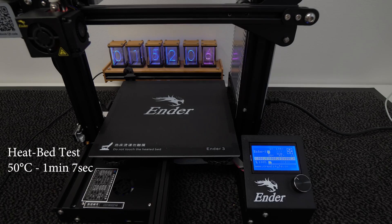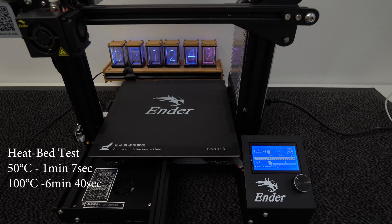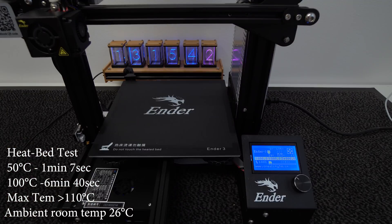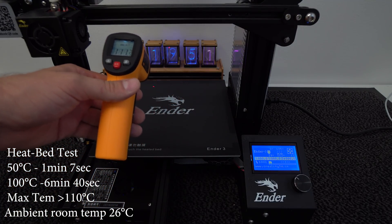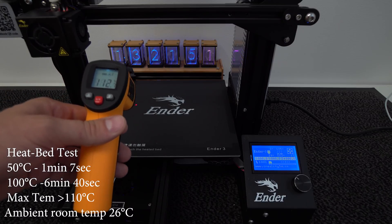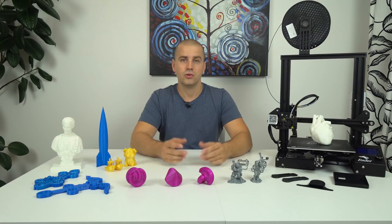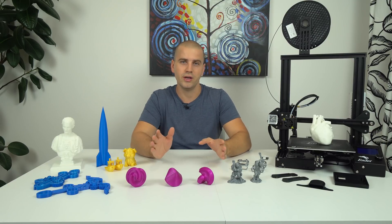When it comes to heated bed temperatures, heat bed warms up very fast thanks to the 24V power supply. So you can start printing very quickly. Here in my test, heat bed on the Ender 3 can reach 50 degrees in just 1 minute and 7 seconds, 100 degrees in 6 minutes and 40 seconds and the maximum heat bed temperature was around 110 degrees which I confirmed with my infrared meter. Those are very good results and you can print with ABS without any mods which is great.